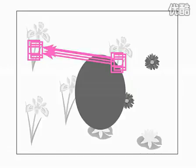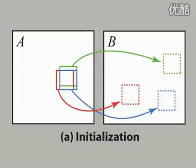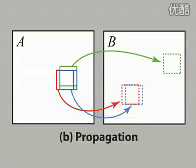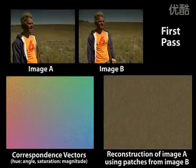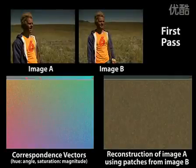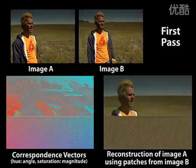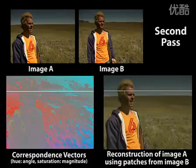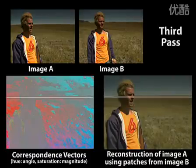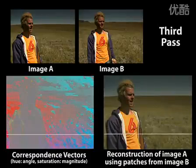Armed with these two observations, we begin with a random initial guess for the patch correspondences, and iteratively improve the results. Our algorithm alternates between propagating good correspondences to neighboring patches, and sampling the nearby image space to find even better correspondences. Although the initialization is completely random, a few lucky guesses propagate quickly to neighboring pixels in the propagation phase. The random sampling phase complements this greedy approach by helping to avoid local minima. The algorithm generally converges in just a few passes.